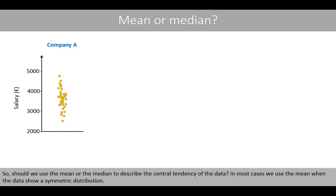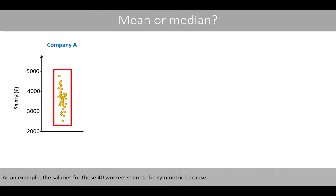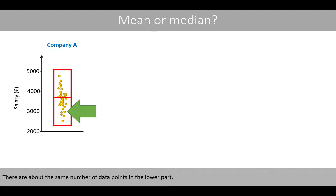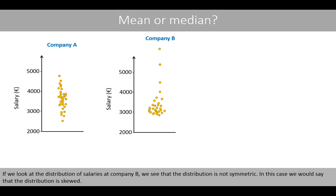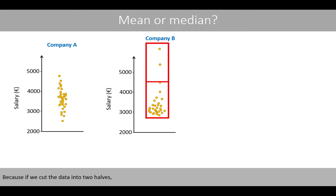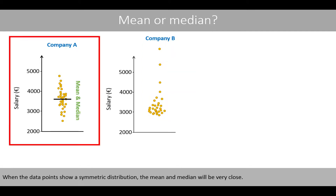So, should we use the mean or the median to describe the central tendency of the data? In most cases, we use the mean when the data show a symmetric distribution. For example, the salaries for these 40 workers seem to be symmetric because, if we cut the data into two equal parts, the distribution looks about the same in the two regions — there are about the same number of data points in the lower part as in the upper part. When the data points show a symmetric distribution, the mean and the median will be very close.